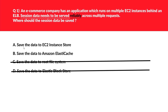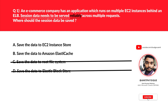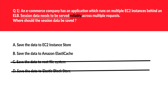Let's move to option A. Option A says save the data to EC2 instance store. The problem with EC2 instance store is that if the EC2 instance goes down for any reason, the session data will be wiped off or lost forever — which we certainly don't want, because the question demands the session data should be written reliably. So this will not meet the AWS Well-Architected Framework reliability pillar. Hence we can reject option A as well.